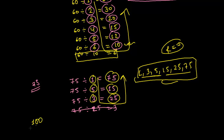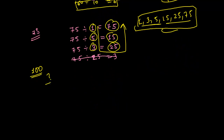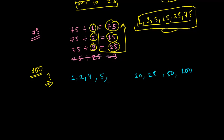Similarly, can you find the factors of 100? After some practice you'll be able to write these easily. 1 can divide 100 in 100 times. 2 can divide 100 in 50 times. 4 can divide 100 in 25 times. 5 can divide 100 in 20 times. 10 can divide 100 in 10 times, but then repetition starts. So the factors of 100 are 1, 2, 4, 5, 10, 20, 25, 50, and 100.